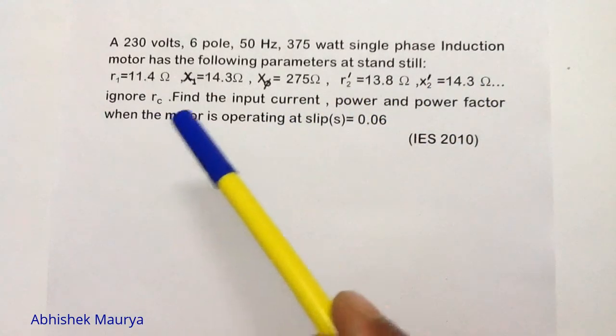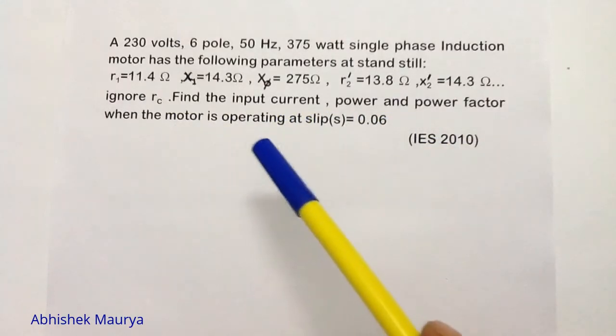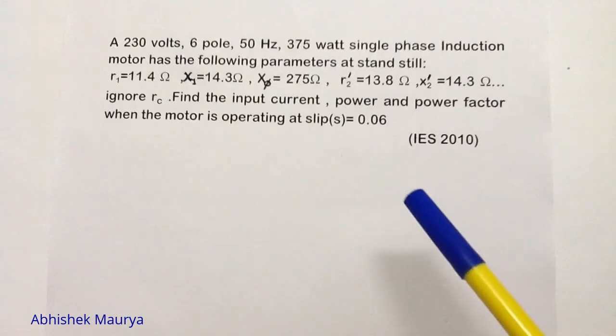We have to ignore the core loss. We have to find out the input current, input power, and the power factor when the motor is operating at a slip of 0.06.